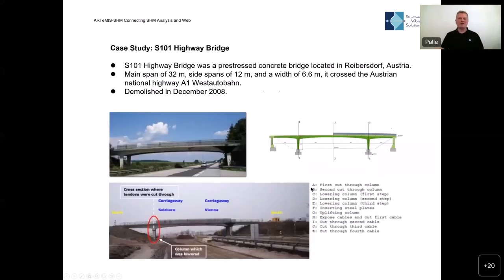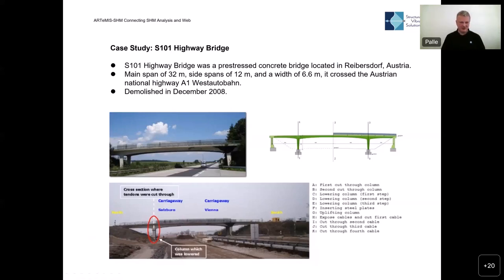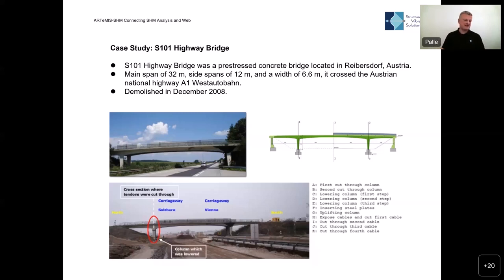Let's show a case study using real data. We have data from a benchmark project on an Austrian highway bridge — the S101 bridge. It was decided to be demolished back in 2008, and just before demolition, researchers were allowed to introduce different kinds of damage, especially around one pier. There is a list of everything that was done over a few days. At the same time, a monitoring system was measuring in 16 channels spread all over the bridge, constantly measuring and dumping files into a folder. This is the data we have been allowed to use as our case study.